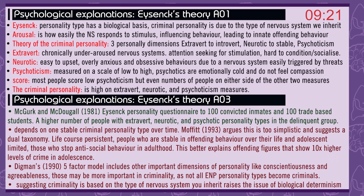McGurk and Dougal, 1981: administered an Eysenck personality questionnaire to 100 convicted inmates and 100 trade-based students. A higher number of people with extrovert, neurotic, and psychotic personality types were in the delinquent group. Eysenck's theory depends on one stable criminal personality type over time. Moffitt argues this is too simplistic and suggests a dual taxonomy: life-course persistent — people who are stable in offending behaviour over their life — and adolescent-limited — those who stop antisocial behaviour in adulthood. This better explains offending figures showing 10 times higher levels of crime in adolescents. Digman in 1990 suggested a five-factor model including other important dimensions such as conscientiousness and agreeableness, which might be more important in criminality as not all extrovert, neurotic, and psychotic personality types become criminals. Finally, suggesting criminality is based on the type of nervous system you inherit raises the issue of biological determinism.